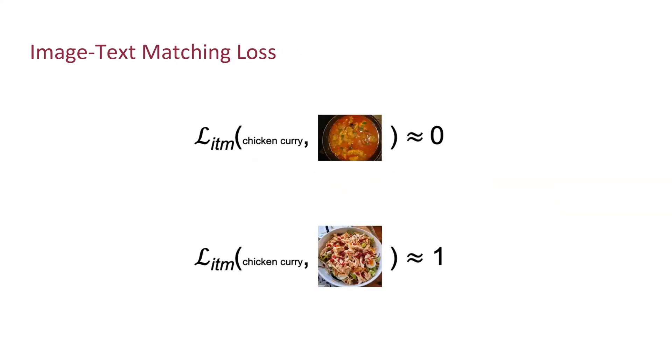Another loss function is the image text matching loss. In this loss function, the goal is to bring text and image embeddings from the same recipe as close as possible. It does this by converting the task into a binary classification task, where the two classes are matching and non-matching. For example, in this case, the loss between the text chicken curry and the image chicken curry should be as close to zero as possible, whereas the text chicken curry with the image chicken salad should be as high as possible.